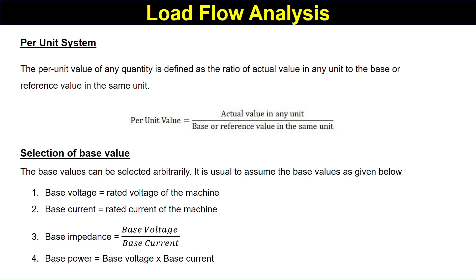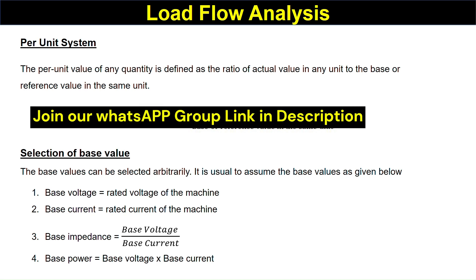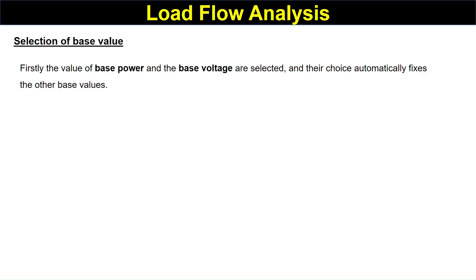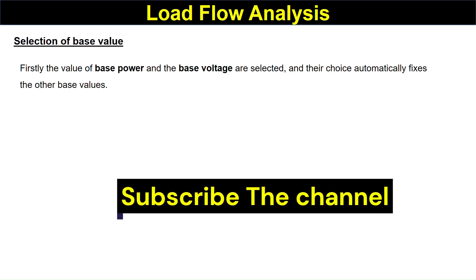Base current is the rated current of the machine. Base impedance is the base voltage divided by the base current. Base power is the multiplication of base voltage and base current. The values of base power and base voltage are selected first, and their choice automatically fixes the other base values.